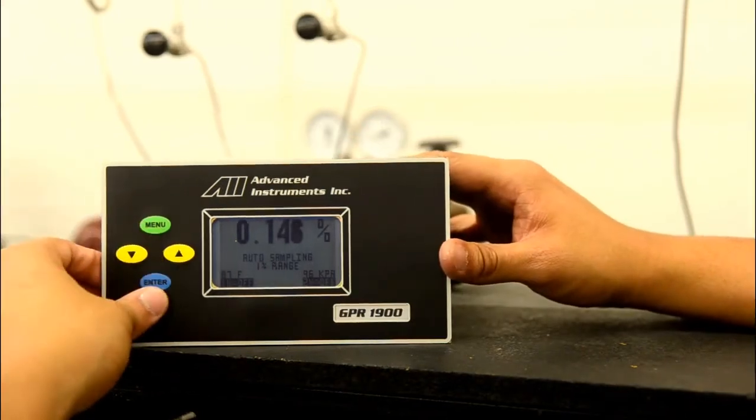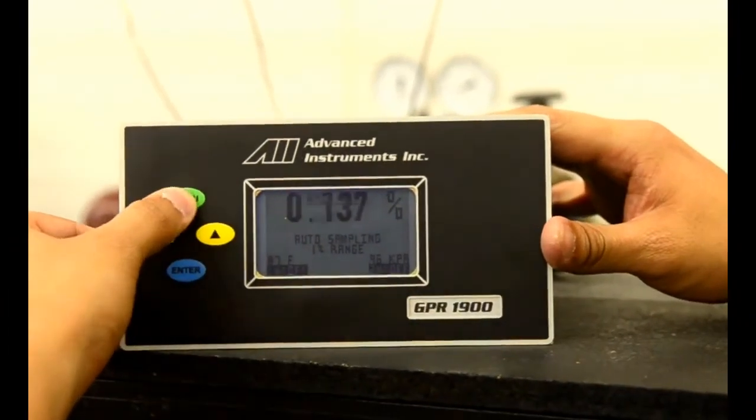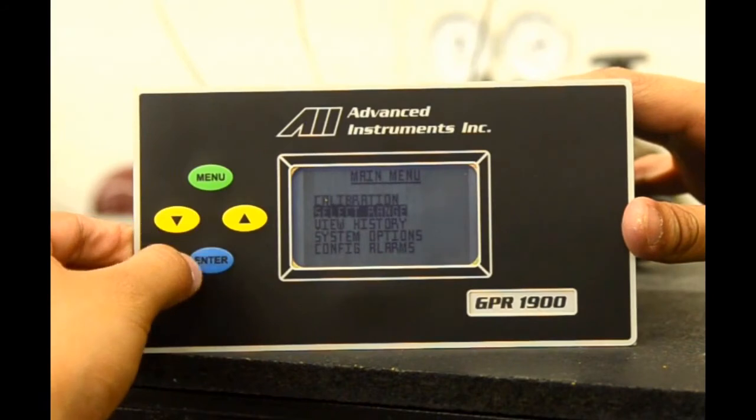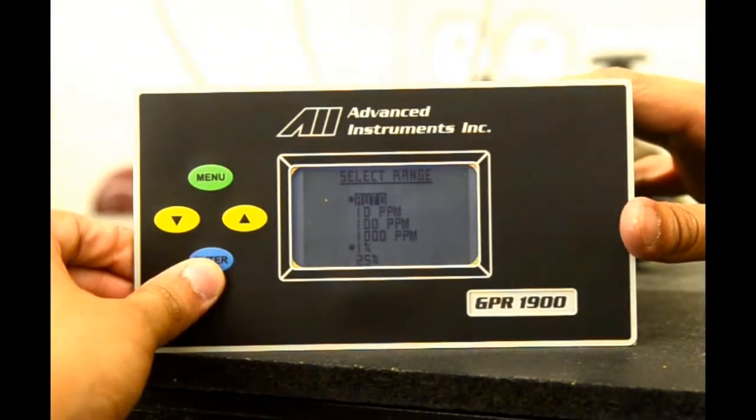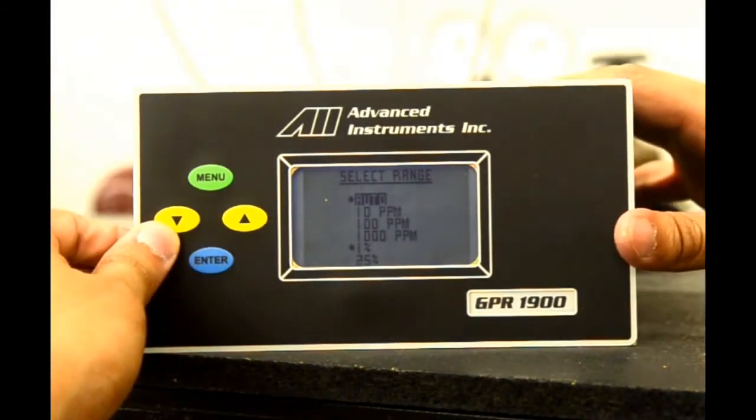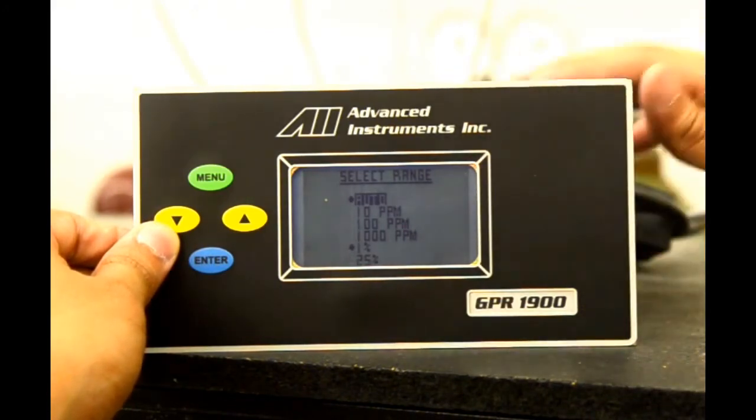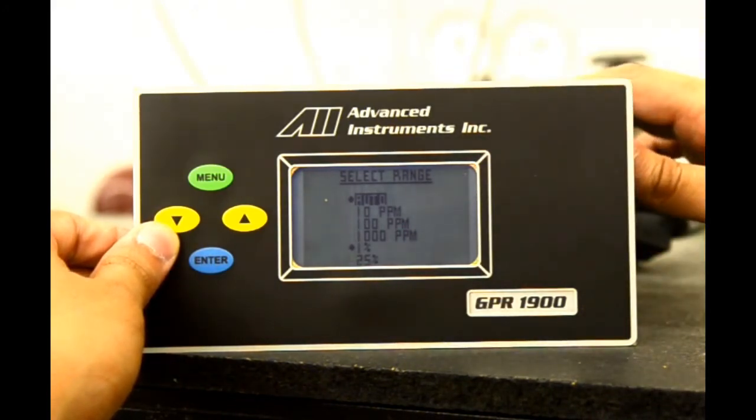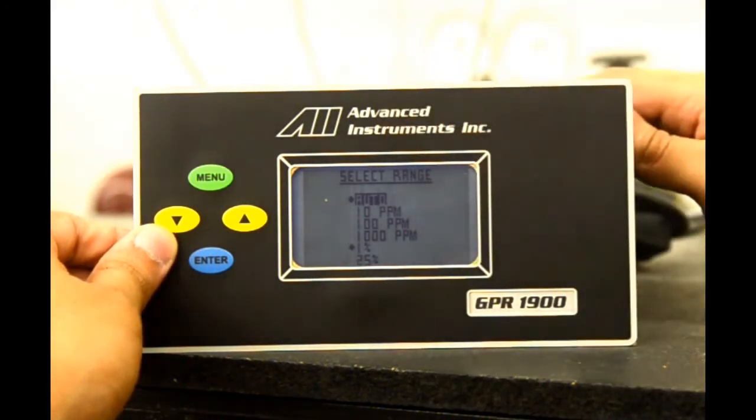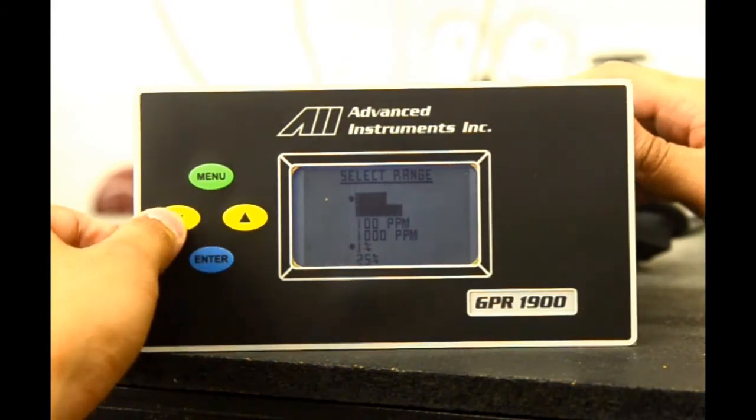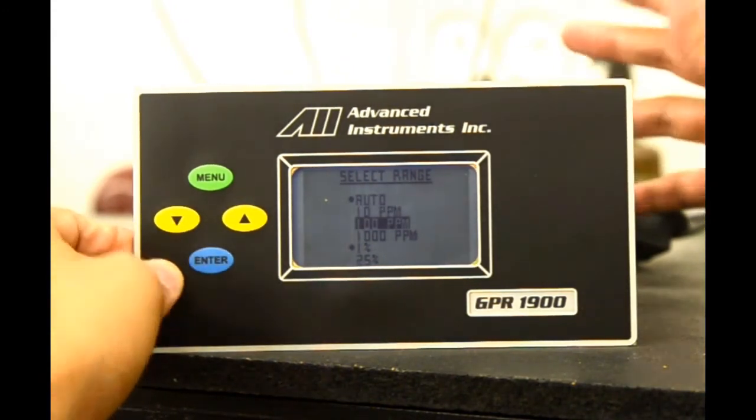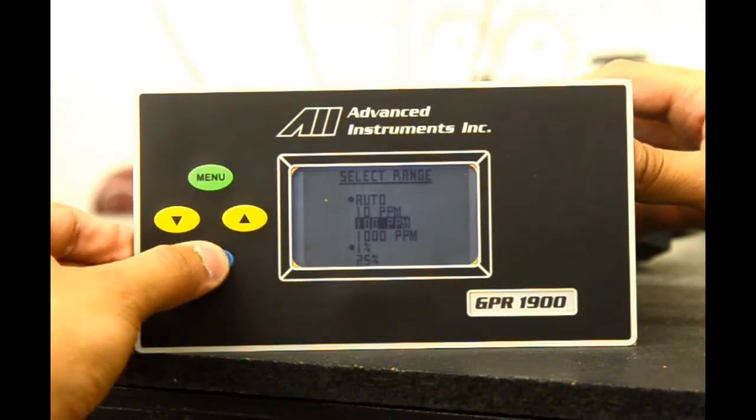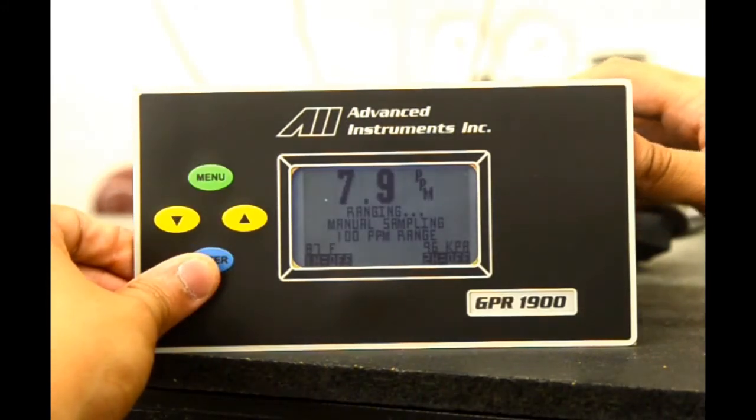We will now go with the select range option. Hit menu, scroll down to select range and select enter. As you can see, currently it is in auto ranging at 1%. This is indicated by the two dots along auto and the 1% range. We will scroll down and select 100 parts per million. This will lock the range at 100 parts, manual sampling. We select enter and as you can see on the main screen, it is under manual sampling at 100 parts per million.